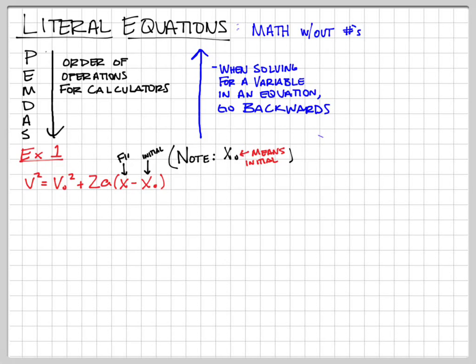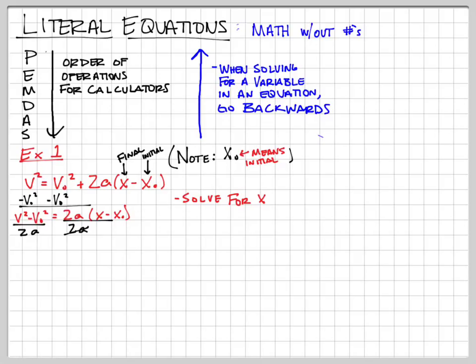We are going to solve for the final X — the X without the subscript zero. We're doing reverse PEMDAS, so the first thing we do is addition or subtraction to get the 2A-times-parentheses term by itself. Our goal is to get X alone and on top. So we subtract V₀² from both sides — the V₀² goes away — leaving V² - V₀² = 2A(X - X₀). That's as much addition and subtraction as we can do right now, because we can't deal with the parentheses until the very end.